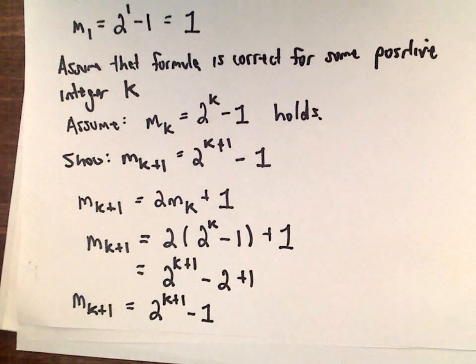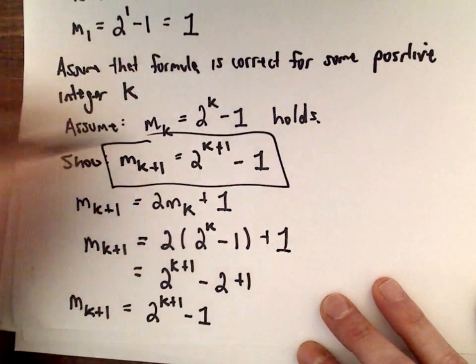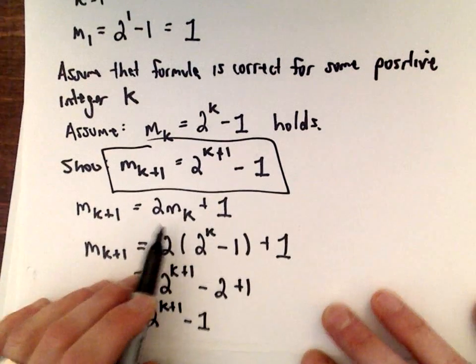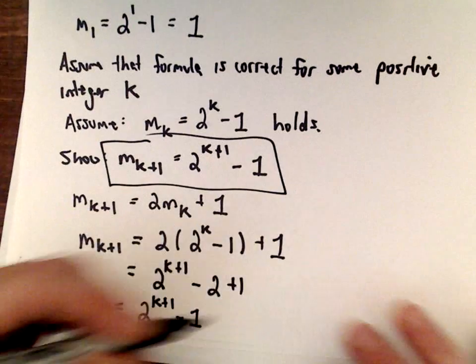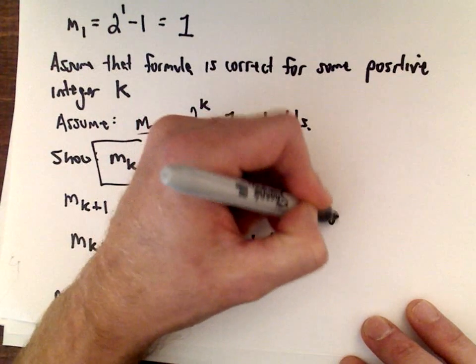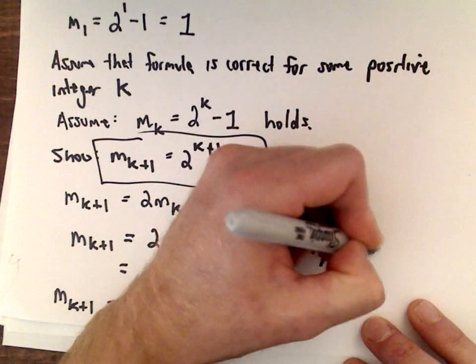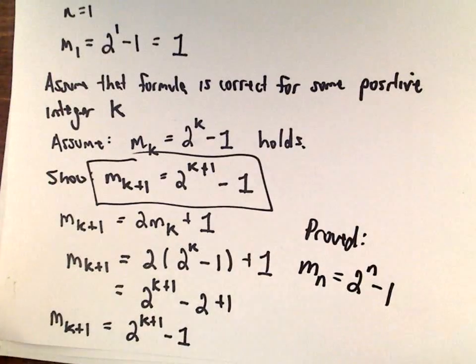Proof complete. We've now shown that this formula holds using our assumption, and now by induction we've proven this formula that m sub n equals 2 to the n minus 1.